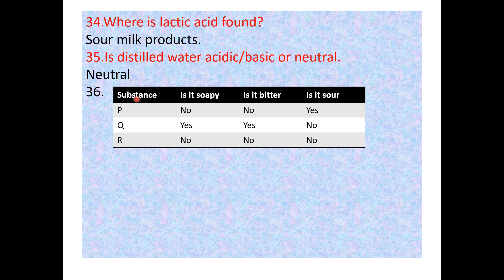Question: Here are substances P, Q, and R. Let's check whether each is soapy, bitter, or sour. Substance P: not soapy, not bitter, and it is sour. Substance Q: it is soapy — yes; it is bitter — yes; it is sour — no.